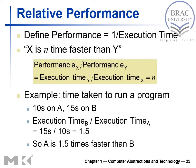Now, relative performance. If we define performance, then performance equals 1 over execution time. So if X is N times faster than Y, this means performance of X over performance of Y equals execution time of Y over execution time of X, and this ratio gives you N.